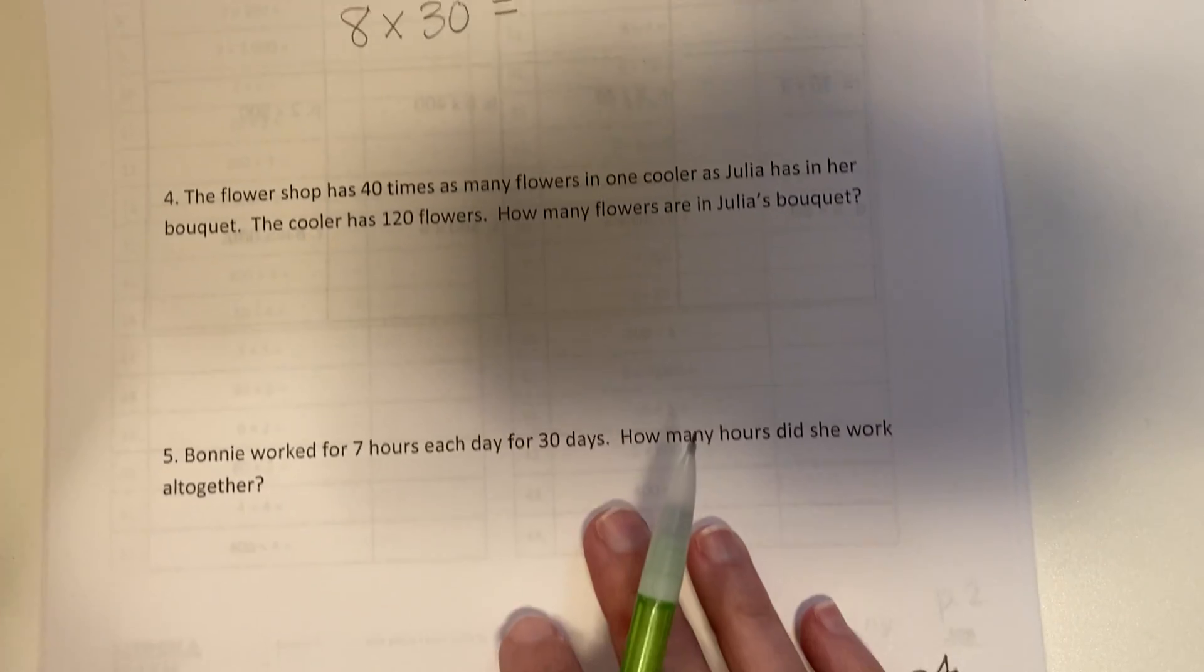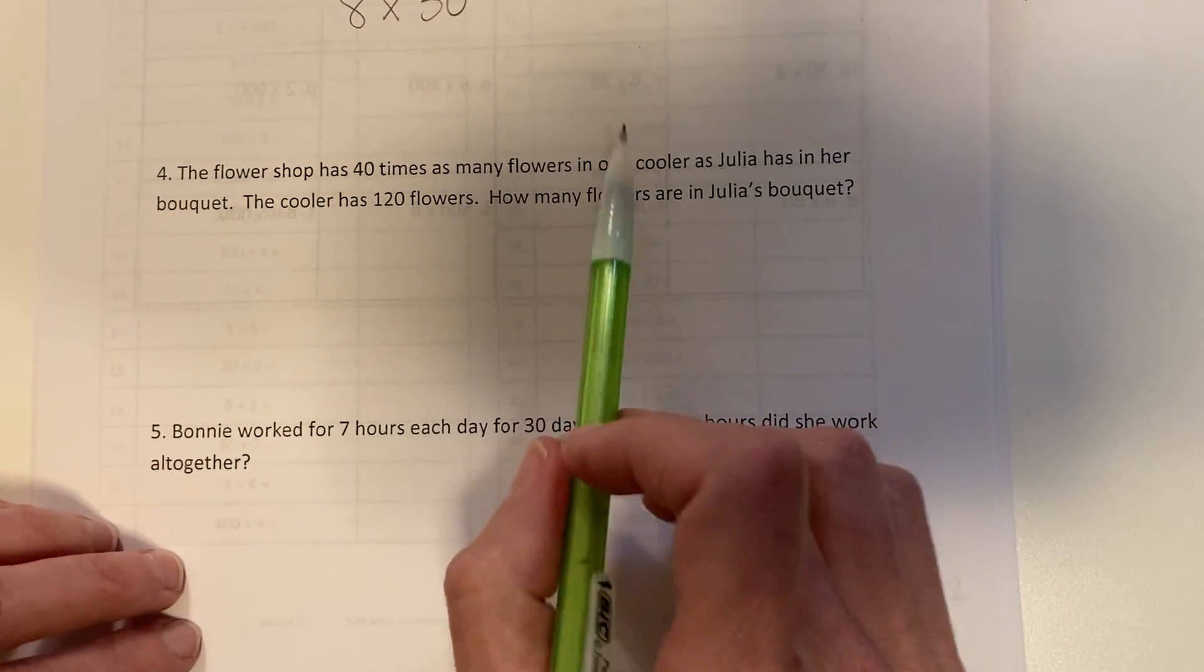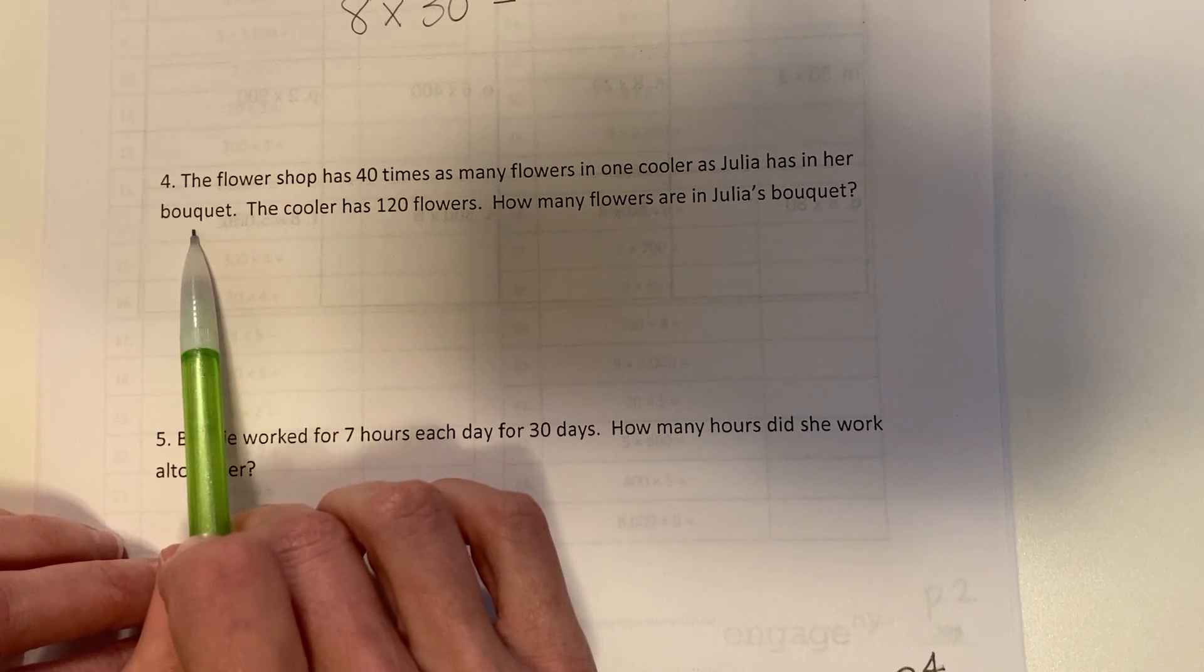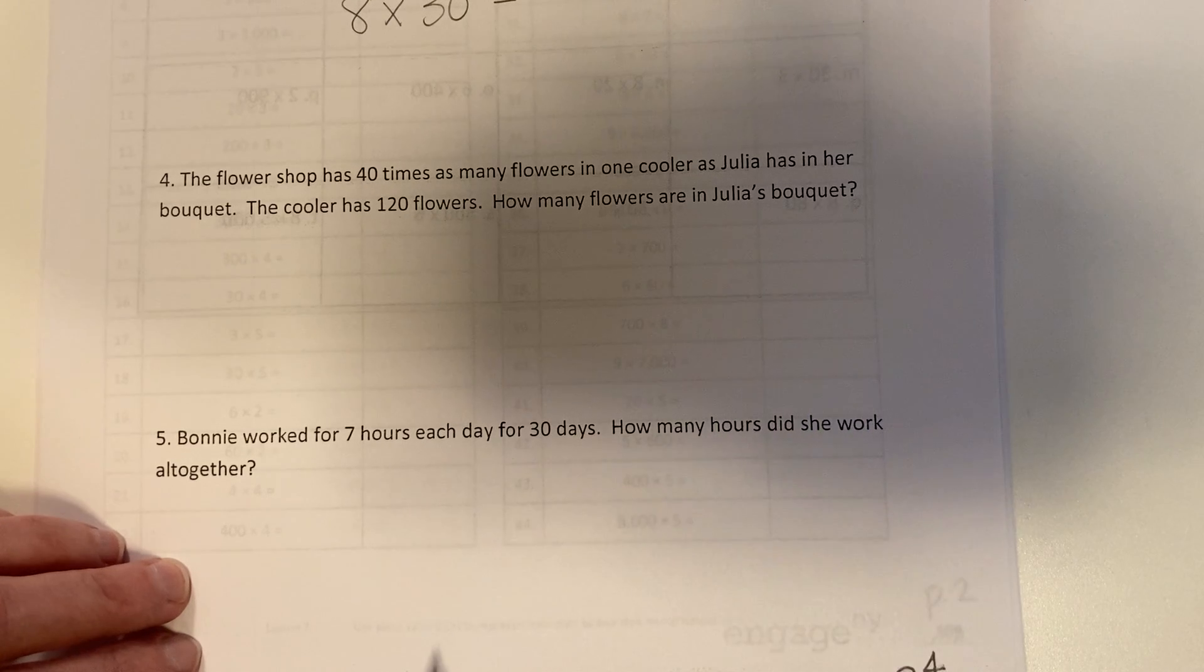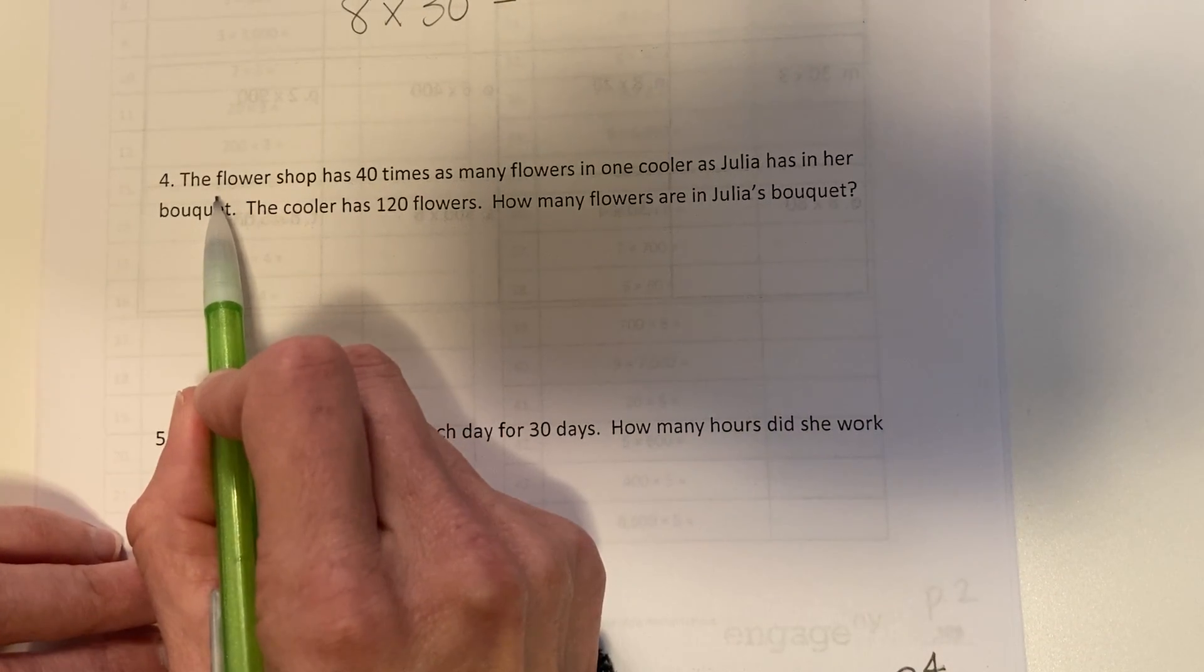The flower shop has 40 times as many flowers in one cooler as Julia has in her bouquet. The cooler has 120 flowers. How many flowers are in Julia's bouquet? That one's a little trickier. I'm going to read it twice.